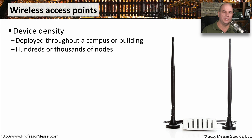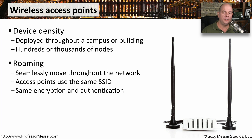Wireless access points allow us to extend our ethernet networks wherever we might need them. You generally see these on multiple floors of a building. If you have a campus environment, you might have them outside between buildings as well. In very large organizations, you can have hundreds or even thousands of access points around the world. If you've deployed a number of access points in your building or on your campus, you can move from place to place and have complete network connectivity the whole time. We call this wireless roaming — where you start in one place, walk to another, and you're moving from access point to access point.